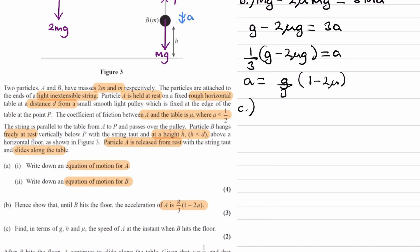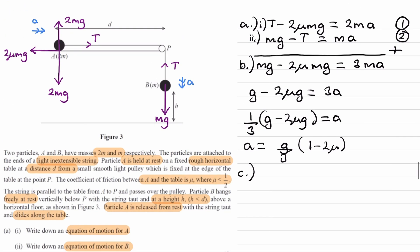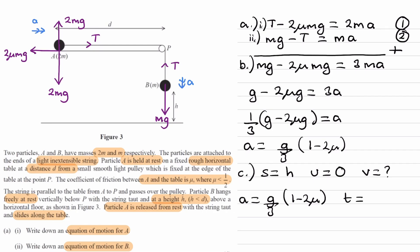For part C, find in terms of g, h, and μ the speed of A at the instant when B hits the floor. This is a SUVAT problem. From our diagram, B travels a distance h before hitting the floor, and therefore A also travels a distance h, since the string is inextensible. Our SUVAT quantities: s = h, initial velocity u = 0 (starts from rest), final velocity v is what we want, and acceleration a equals g over 3 times (1 minus 2μ). We don't need time since we already have three quantities.